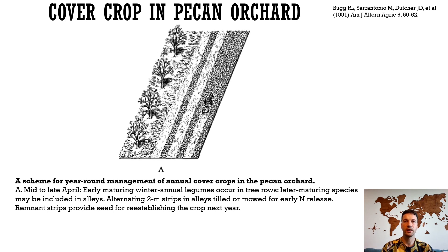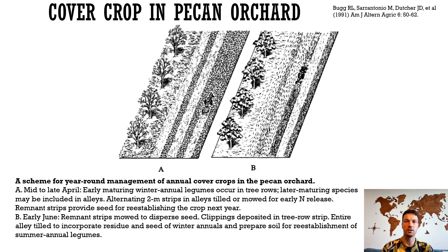In spring, alternating 2-meter-wide strips of cool season cover crops on alleys could be tilled in mid to late April, or allowed to mature. The tilled strips would supply nitrogen to pecan trees immediately, while the adjoining untilled or reseeding strips could be mowed after seed is mature to ensure dispersal of seeds and reestablishment of cover crops over the entire alley. Rotary mowing of remnant strips can disperse seeds to tilled areas. The same strategy can be used with summer cover crops and natural ground vegetation, which should be mowed after leguminous plants have produced seeds; otherwise it will become dominated by grasses. Mowing of alternate strips also ensures continuity of habitat for beneficial organisms.